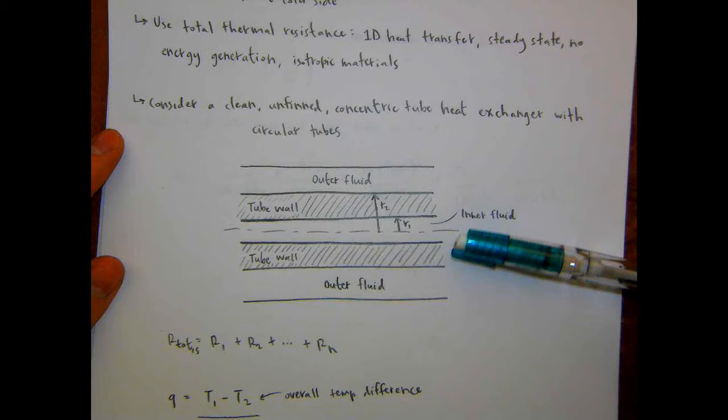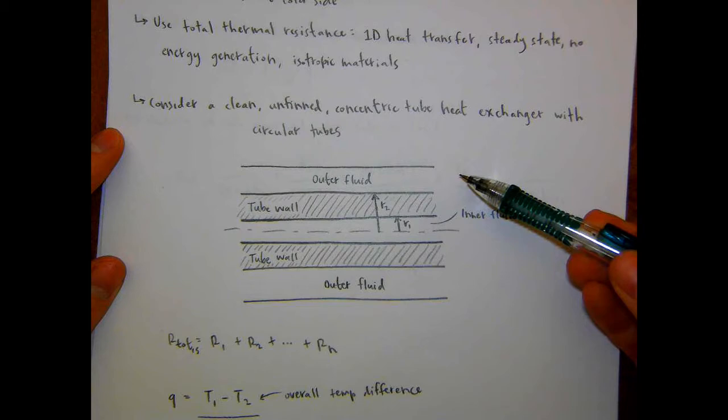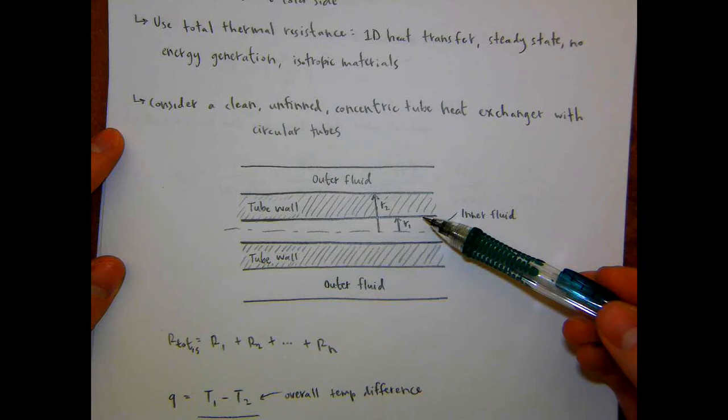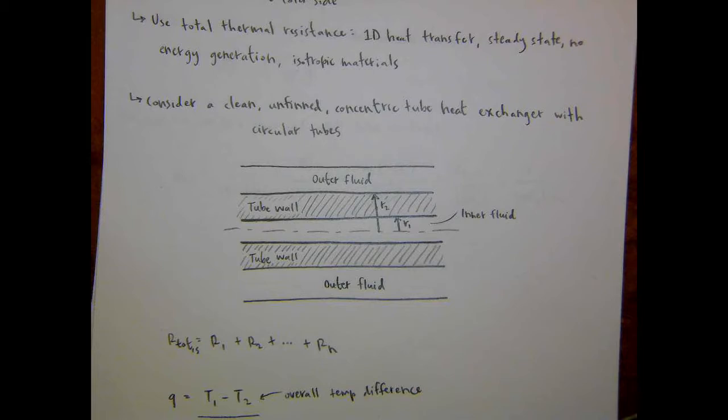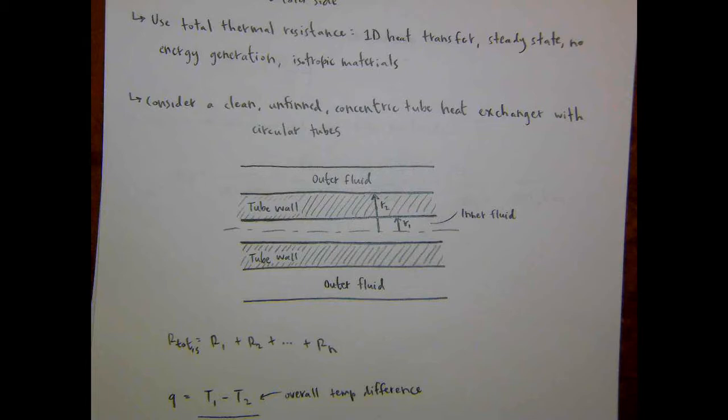For now, until we make that simplification, we've got the inner fluid, the tube wall with finite thickness, and then the outer fluid. For this setup, R1 is the radius to the inner wall, and R2 is the radius to the outer part of the inner tube wall. We'll go through a couple of other simplifications of our total thermal resistance and what the notation is for those cases.